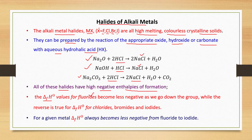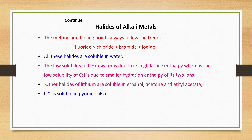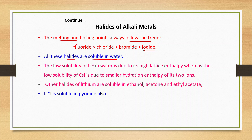All of these halides have high negative enthalpy of formation. The standard enthalpy of formation values for fluorides become less negative as we go down the group, while the reverse is true for chlorides, bromides, and iodides. For a given metal, the standard enthalpy of formation always becomes less negative from fluoride to iodide, so the metal fluoride has the most negative standard enthalpy of formation. Metal fluorides also have the highest melting and boiling points, while metal iodides have the lowest.